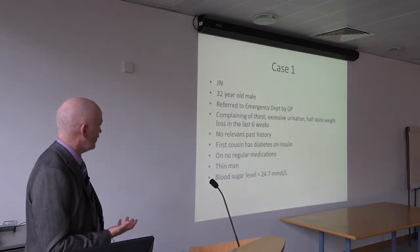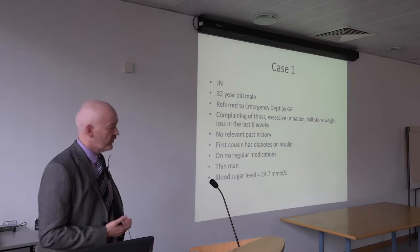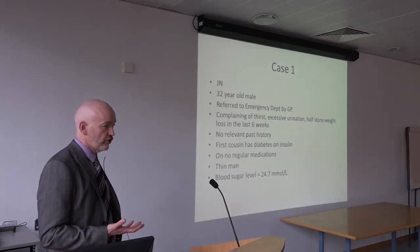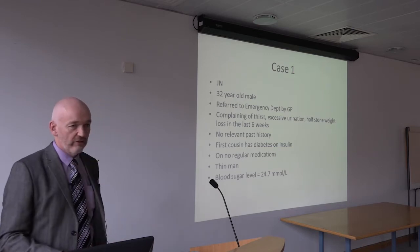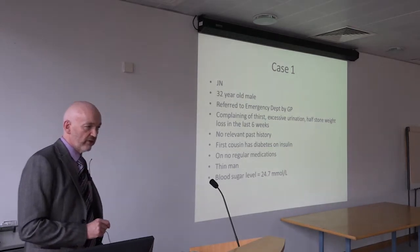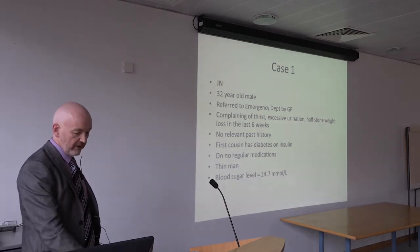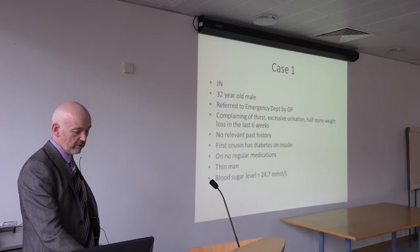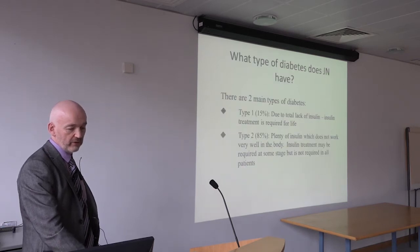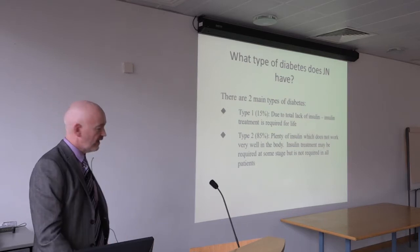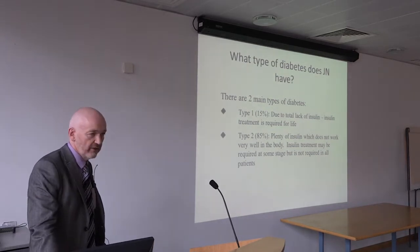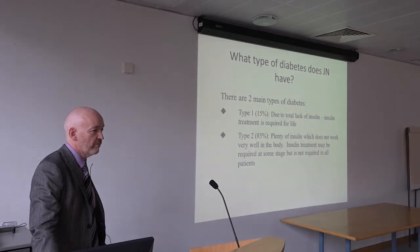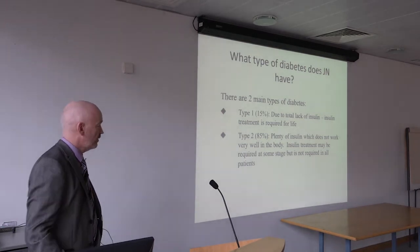To highlight the differences with a couple of cases: a 32-year-old man was referred to the emergency department with typical symptoms — thirst, lots of urine, weight loss — all over a short six-week period. He had no prior medical history, a first cousin with diabetes taking insulin, was known to be thin, and had a very high blood sugar of 24.7, well above the threshold of 7. This short, acute presentation pointed to type 1, which accounts for about 15% of diabetes.